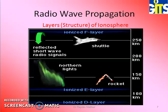The ionosphere, as mentioned, is the most important layer, and it is further divided into three or four sub-layers. The first is the D layer, which is around 85 kilometers above the earth's surface. Then we have the ionized E layer, which is around 150 kilometers above the earth's surface. The next is the F layer, which is divided into two parts — F1 and F2 — positioned at around 250 kilometers above the earth's surface.